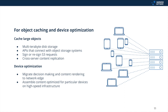It also enables cross-server content replication. And as part of its flexibility, it's able to optimize the content delivery experience for devices at the edge — letting you migrate decision making and content rendering to the network edge and assemble content optimized for particular devices on high-speed infrastructure rather than client-side, which significantly minimizes latency.